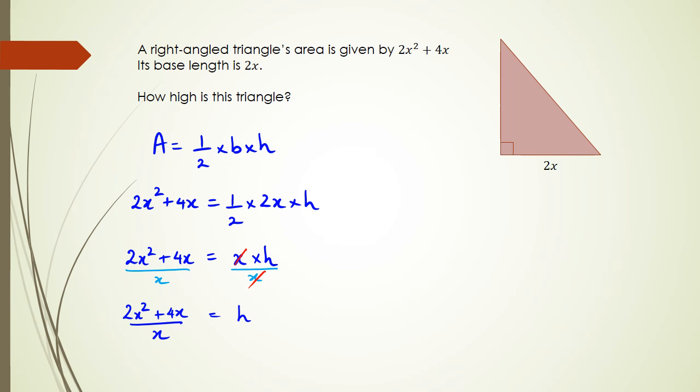So this is the height, but of course we can actually simplify this a bit more. We can write this as height is equal to 2x² over x plus 4x over x, which means we simplify this as height is equal to 2x + 4.